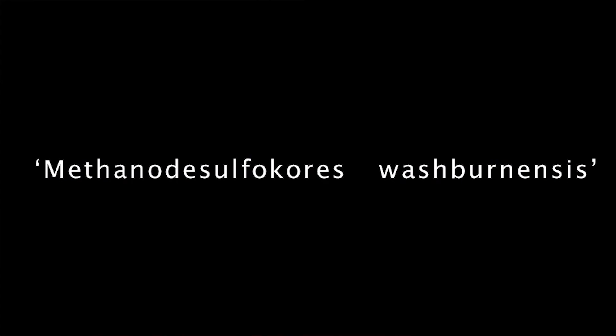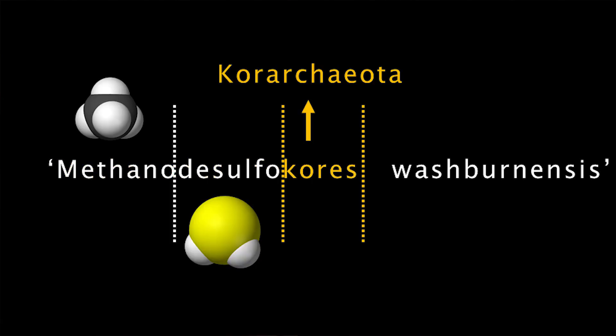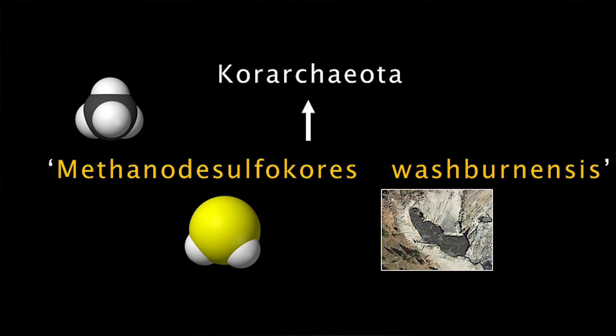Because of these interesting characteristics, we provisionally named this organism Methano-Dysulfo-Coris Washburnensis. Methano for methane, Dysulfo for sulfur, Coris for core archaeota, and Washburnensis because, you guessed it, it came from Washburn Hot Springs in Yellowstone National Park.